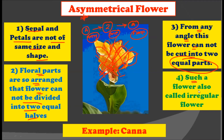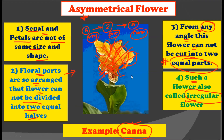Such a flower is also called as the irregular flower. The example for this irregular or asymmetrical flower is canna. In the asymmetrical flower, sepals and petals are not of the same size and shape, and they are arranged in such a way that they cannot be cut into two equal parts from any angle.